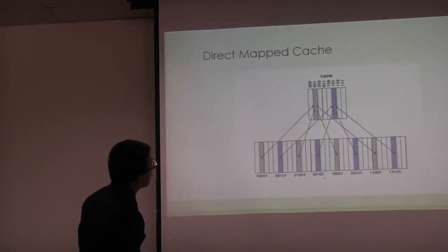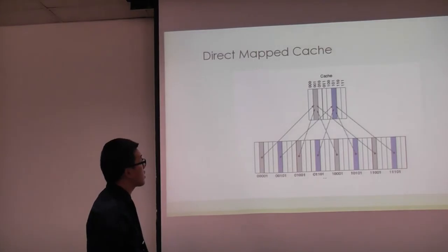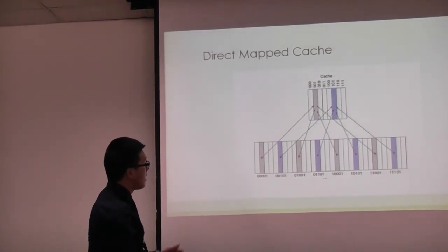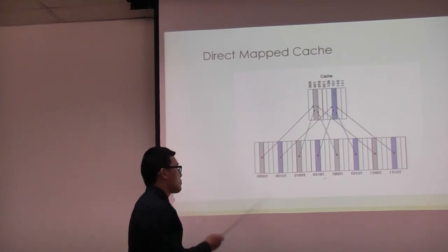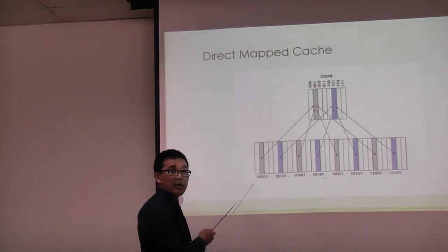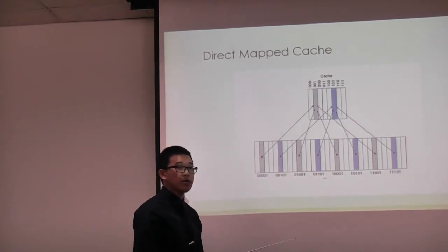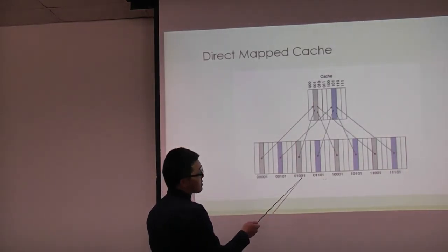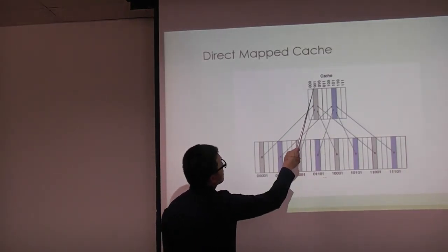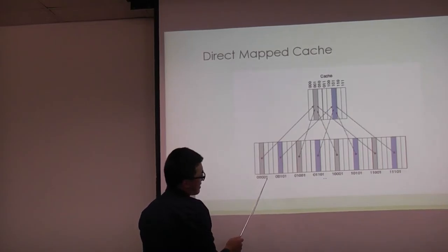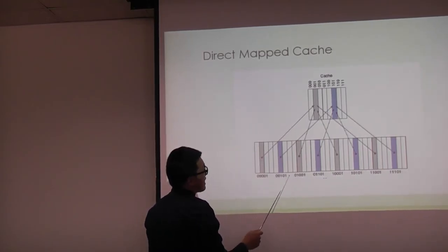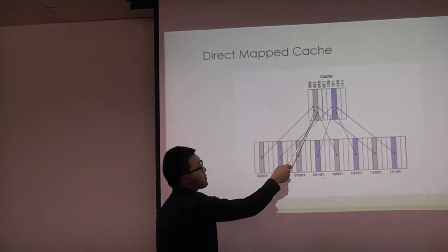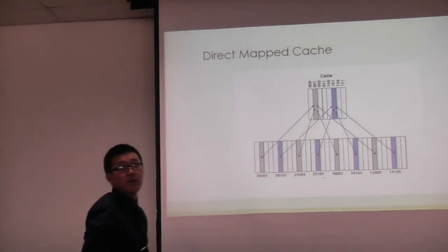Our cache organization is Direct Map Cache, chosen for simplicity. In a direct map cache, the address is broken into a tag and index. Two addresses with the same index bits are mapped to the same cache location. For example, addresses with index bits 001 but different tags both map to cache location 001, so reading and writing those two addresses use the same cache line.